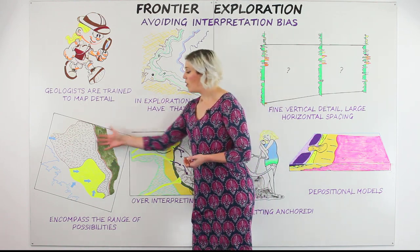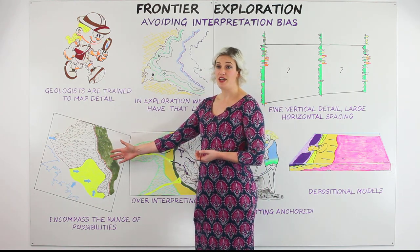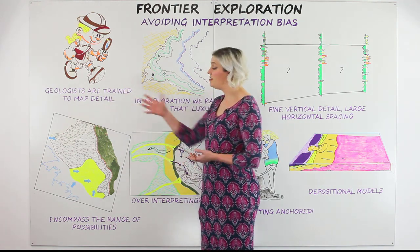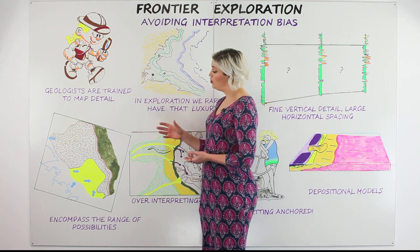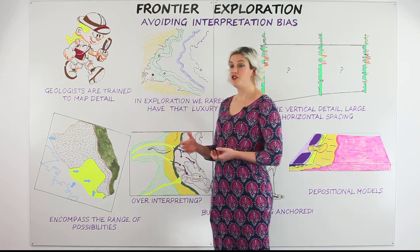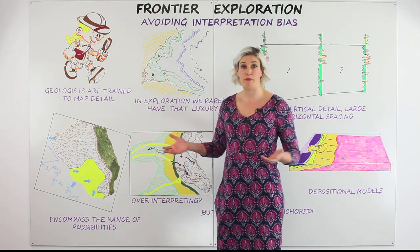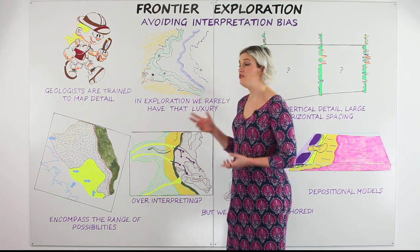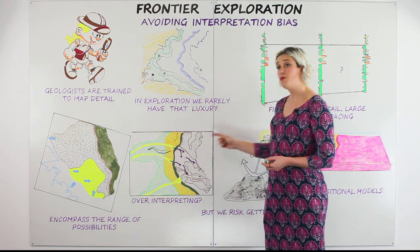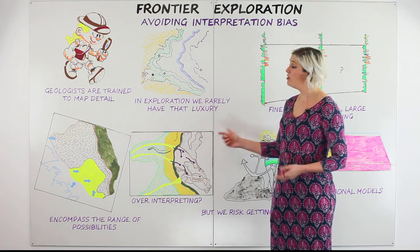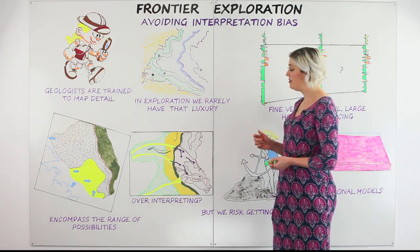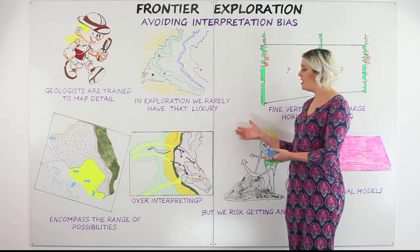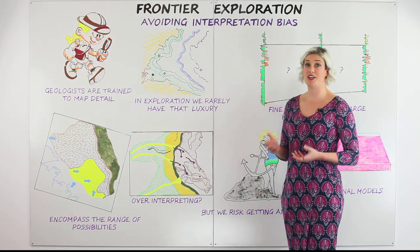Therefore, what I should be drawing is not lovely geological facies maps like this which look great, but things that really represent what I actually know right now. That would be a play fairway style map, where I'm showing where I believe the sand-dominated facies to be and where I believe the mud-dominated facies to be. That still allows me to focus my exploration and recommend which blocks we should be bidding on in a licence round, but it doesn't tie me to an interpretation I can't really back up with my data.